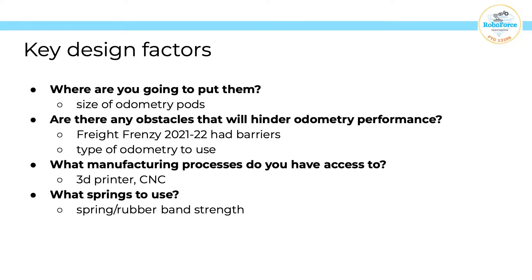The third factor is what manufacturing process you have access to. Most custom odometry pods use 3D printed plates or cases, and sometimes they replace the 3D printed plates with CNC aluminum. With springs, different rubber bands or springs have different strength, and different spring strengths lead to a variety of different accuracies — so keep that in mind.